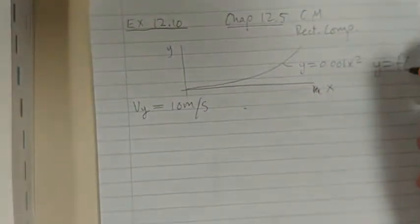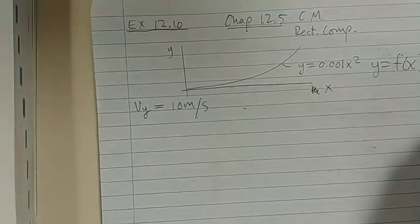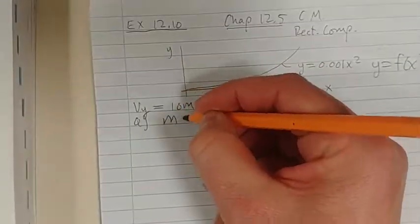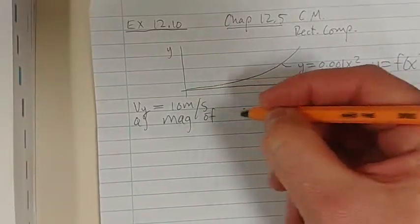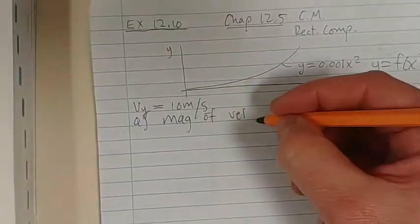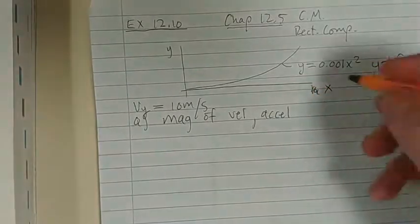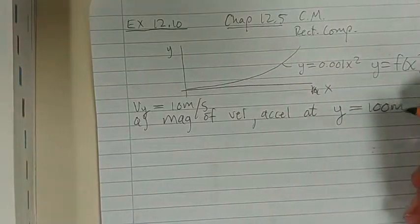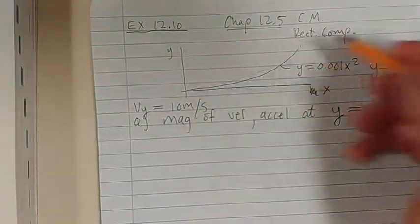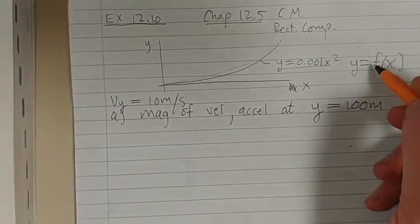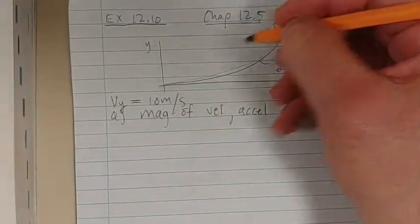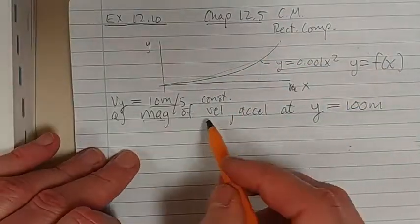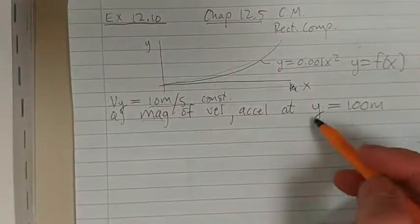So y is a function of x. The question is: determine the magnitude of velocity and acceleration at vertical position y equals 100 meters. We've got the path, we know it's a function of x, and the vertical velocity is 10 meters per second constant. What do they want? The magnitude of velocity and acceleration at a certain height.